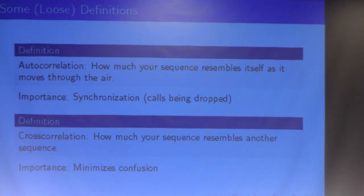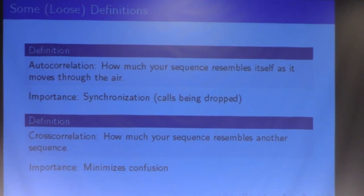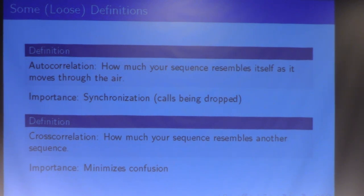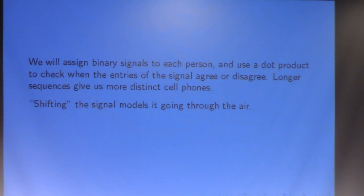So, here's autocorrelation: how much your sequence resembles itself as it moves through the air. And cross-correlation is just how much your sequence is going to resemble another sequence as it moves through the air. And this is going to be good for synchronization and minimizing confusion.